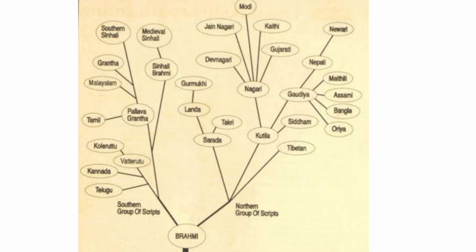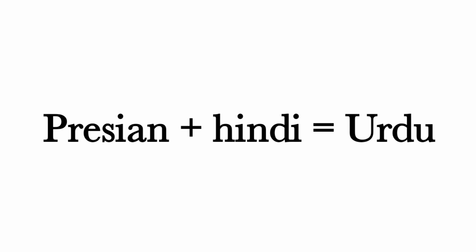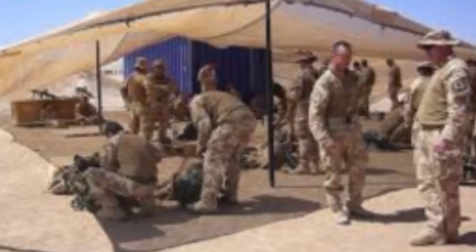The Turks introduced Persian in India and it became the language of administration. Much later, Persian and Hindi fused to give birth to a new language — Urdu. Urdu means 'camp'; it was called a camp language because it evolved and developed in the camp of soldiers. Urdu developed as a link language which was spoken and understood by all.